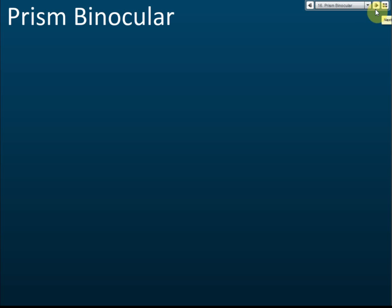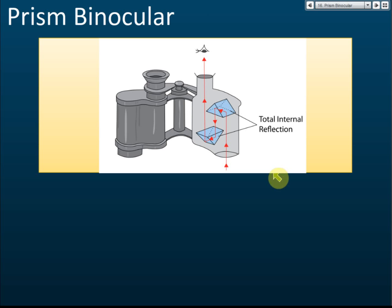Applications of total internal reflection: prism binoculars. If you want to use a binocular to enlarge something very far away, you need two pieces of lens — one here and one here. To get a brighter and bigger image, these two lenses need to be quite far apart, maybe 50 cm or 100 cm. If you build the binocular straight away using just lenses, the binocular will become very long.